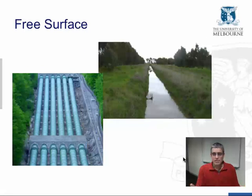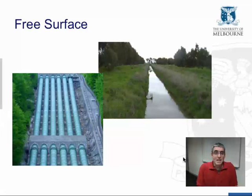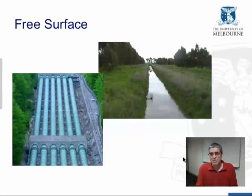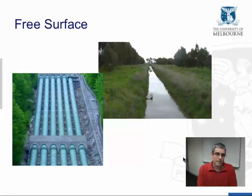The key feature of open channels that differentiates them from a pipe is that they have a free surface. There's both good news and bad news with this free surface. The good news is it makes things easier because we know what the pressure is all the way along the open channel — it's at atmospheric pressure, at least at the surface of the channel.